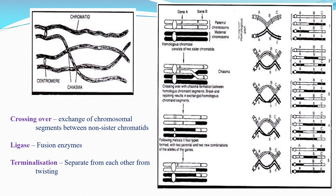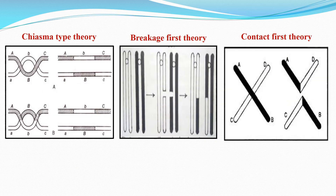Crossing over means the exchange of chromosomal segments between non-sister chromatids. Ligase is a fusion enzyme used as a binding agent after the chiasma step. Then, terminalization separates each chromosome from the two strands. At the chiasma, chromosomes break and rejoin with mutual exchange of segments. The breakage-first theory was described by Muller. According to this theory, non-sister chromatids of homologous chromosomes first break without crossing over, then the broken segments rejoin to form new combinations.